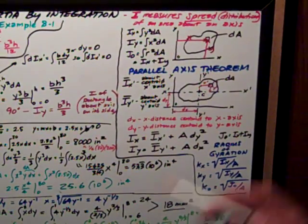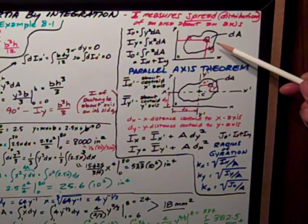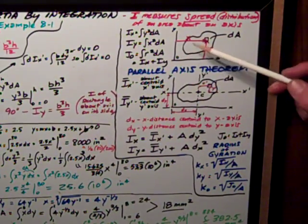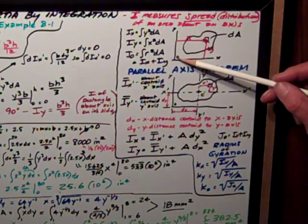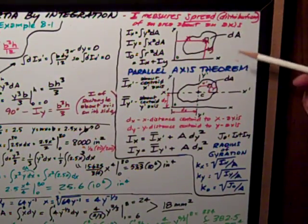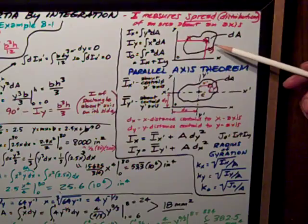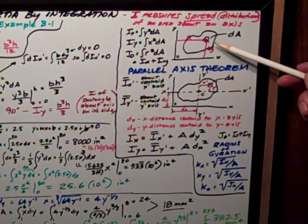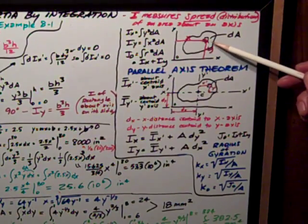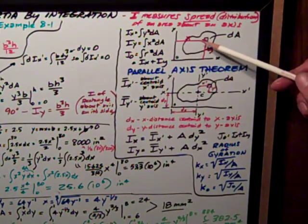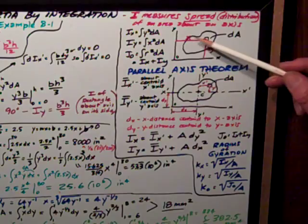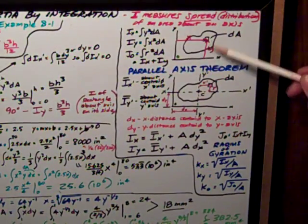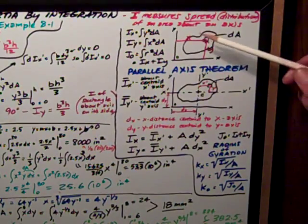So the basic calculus derivation of it is, if I have an area, this blob, in an x-y axis with an origin here, and I say a little element of that area, infinitesimally small, is this dA, this little square. It's located a distance x from the y-axis and a distance y from the x-axis.